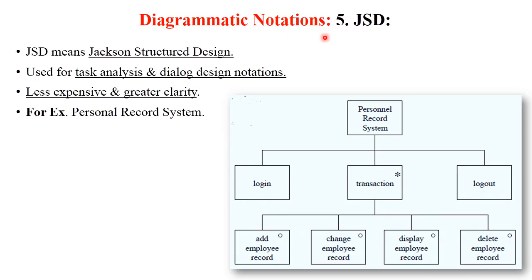The next type of diagrammatic notation is JSD — Jackson Structured Design. It is used for task analysis and dialogue design. This notation is less expensive and provides greater clarity. For example, in a personal record system, there are three options: login, transaction, and logout. Transaction is further divided into sub-parts: add employee records, change employee record, display employee record, and delete employee record. JSD always shows structure in hierarchical format.